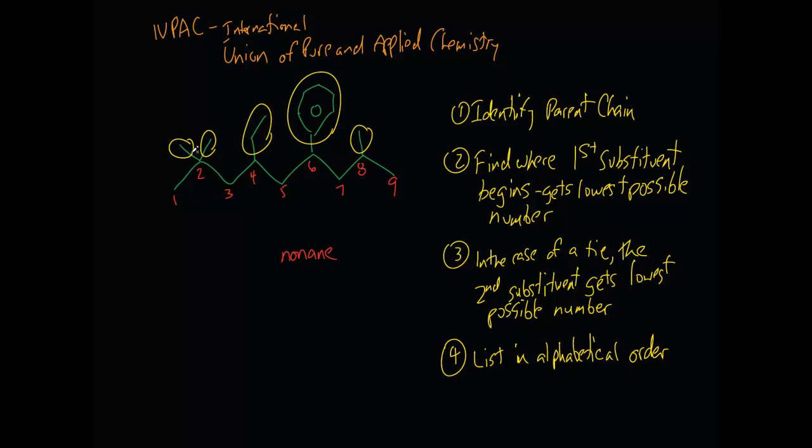So we have here what we have 2, 2, 8 trimethyl. 2, 2, 8 trimethyl, which means three methyl groups. Two of them at the two carbon, one at the eight carbon. So each one of these refers to the placement of each methyl group. We also have a 4-ethyl.